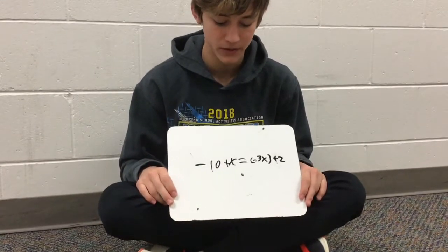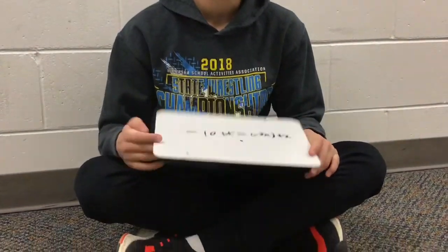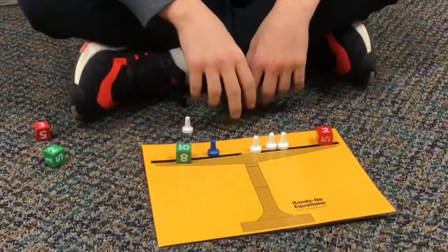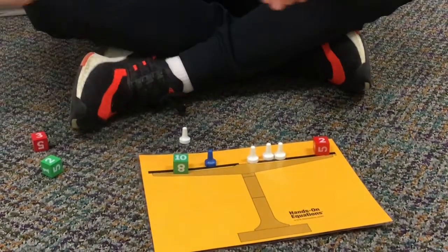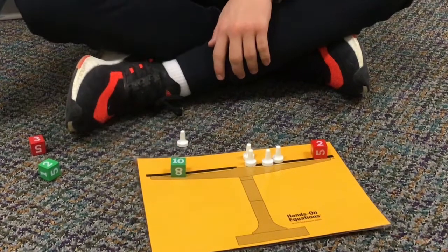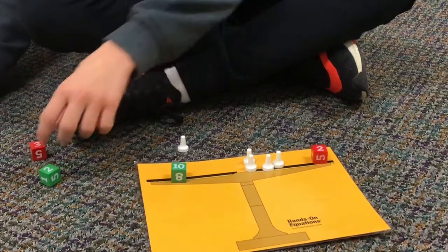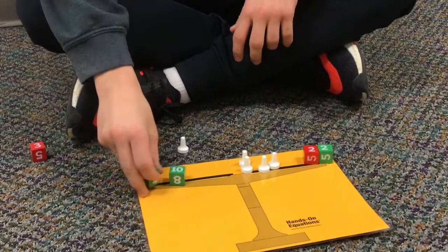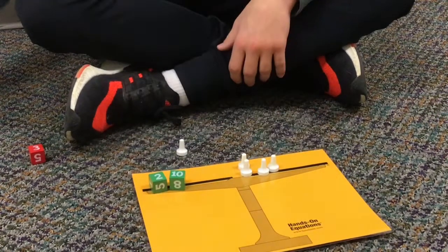The next problem is negative 10 plus x equals the opposite of 3x plus 2. I already have the problem set up. The first thing you have to do is add 2 white pawns on both sides. And since this is a pair of zero, you can take it off. And now I'm going to do the same thing but with cubes — add a negative 2 on this side and then another negative 2 on this side. This would be a negative 12. And this is a pair of zero, so I'm going to take that off.